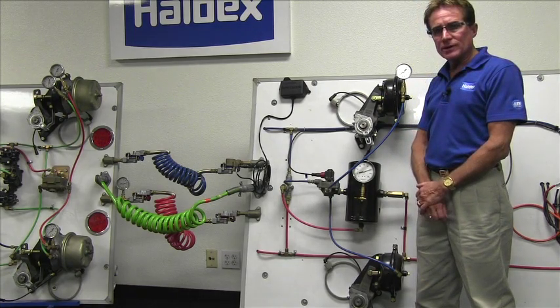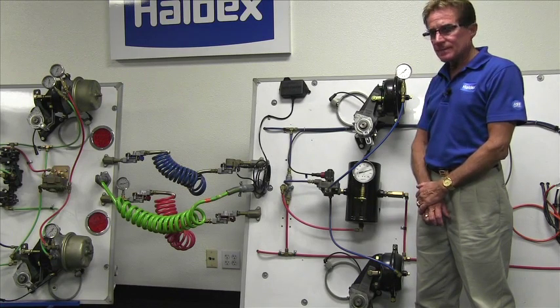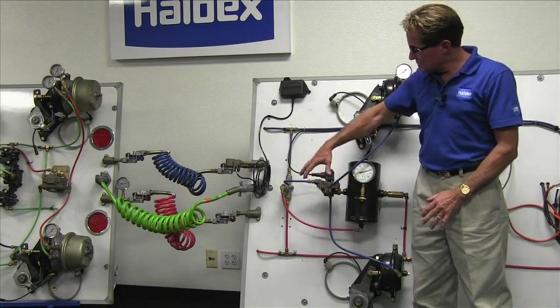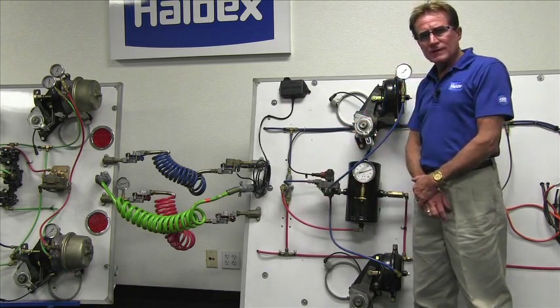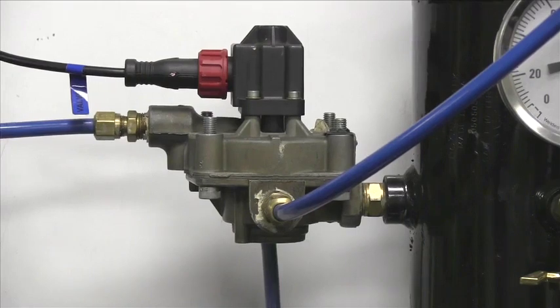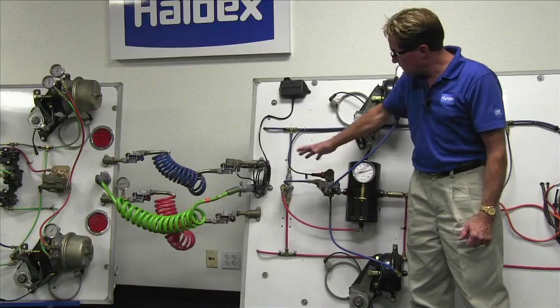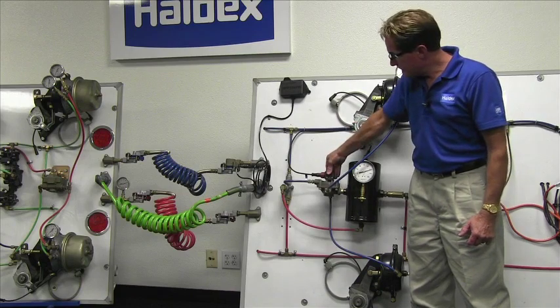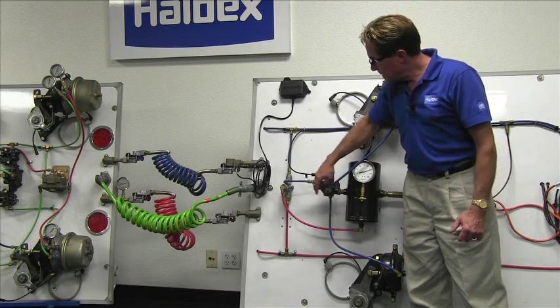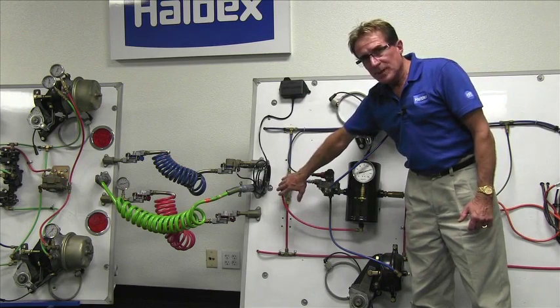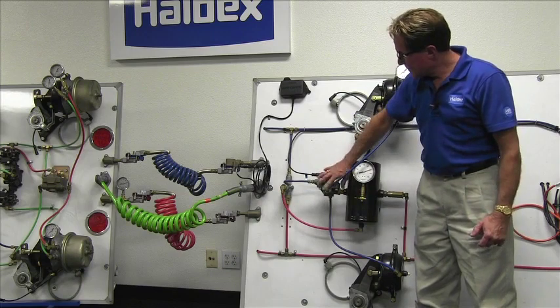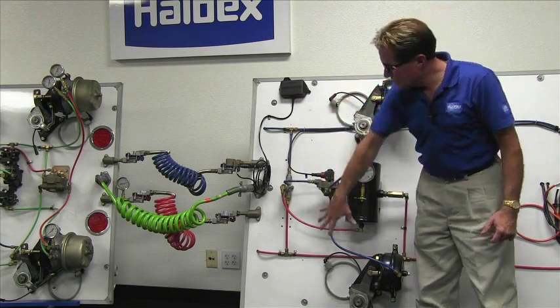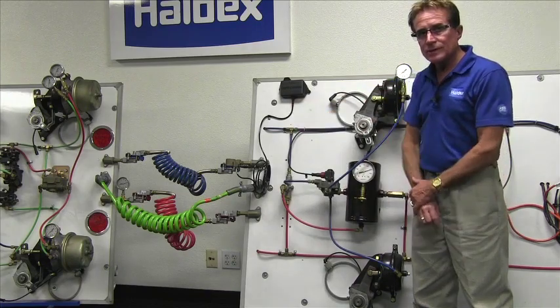Now a converter dolly also requires an ABS system. Now since there is no spring brakes, we won't use a full function valve. We will use just the service relay ABS valve found built into the full function valve. Here are the solenoids, the hold and the dump, and again, no spring brakes, but we have an emergency control valve. So this here is the anti-lock provision, along with two additional wheel end sensors and tone rings.